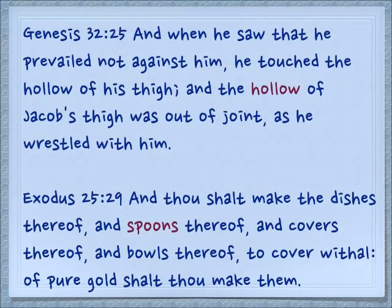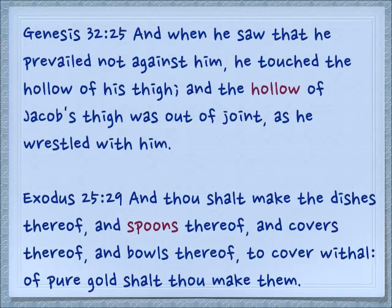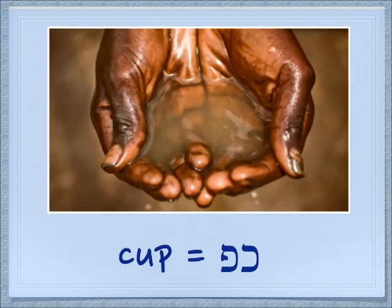Because of the shape of the palm of the hand we're going to see some other associated meanings. In Genesis 32:25: 'And when he saw that he had not prevailed against him, he touched the hollow of his thigh, and the hollow of Jacob's thigh was out of joint as he wrestled with him.' So we have this idea of the hollow part for the way the palm of the hand can be shaped. Then again in Exodus 25:29: 'And thou shalt make the dishes thereof, the spoons thereof, and covers thereof, and bowls thereof to cover with — all of pure gold shalt thou make them.'